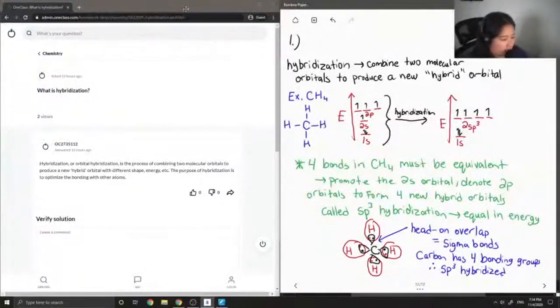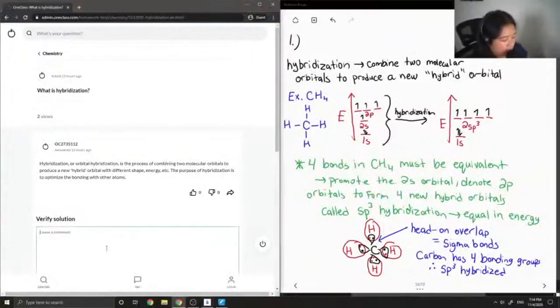So let's see what our junior tutor said. Hybridization or orbital hybridization is the process of combining two molecular orbitals to produce a new hybrid orbital with different shape, energy, etc. The purpose of hybridization is to optimize the bonding with other atoms. And then we would say that this solution is correct. I'll also type out my example.